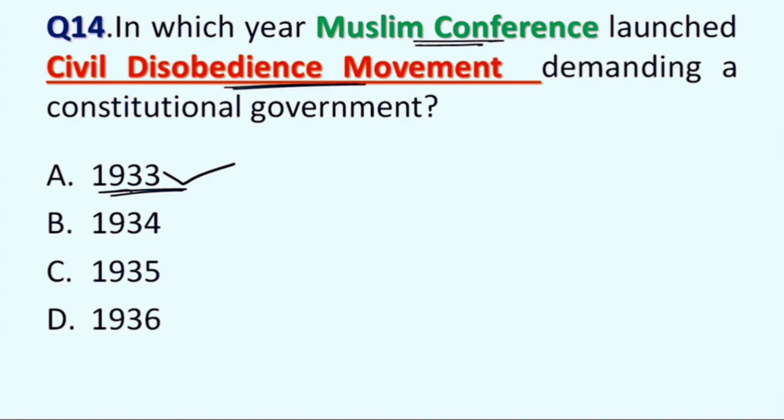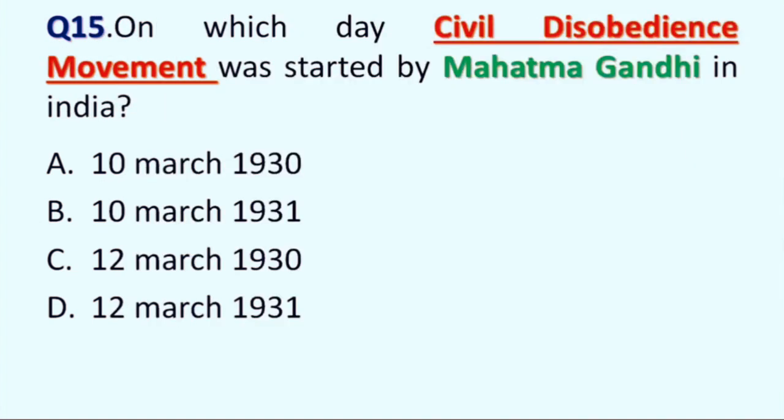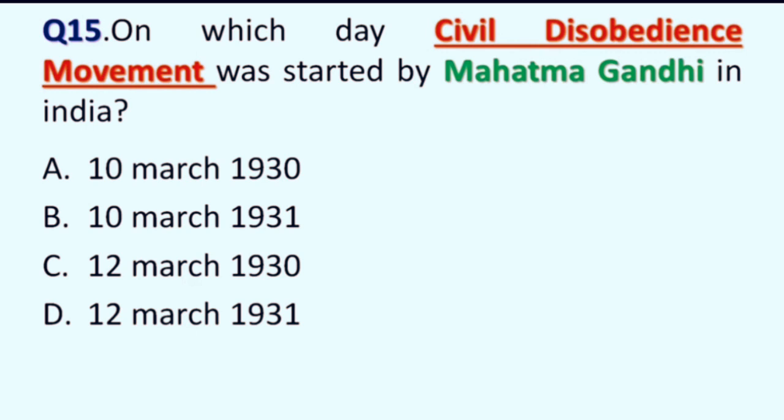Next question is: on which day was the civil disobedience movement started by Mahatma Gandhi in India? The answer to this question you have to write in the comment section. Your options are: A: 10th March 1930, B: 10th March 1931, C: 12th March 1930, and D: 12th March 1931. If you like this video, please share and subscribe to my channel and hit the bell icon to get the latest notifications. Thank you.